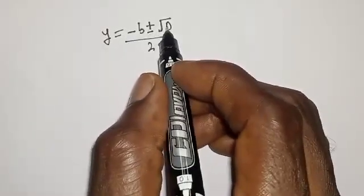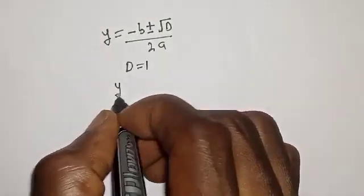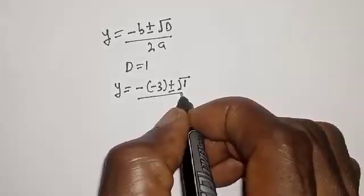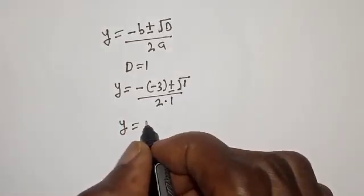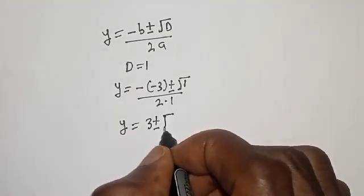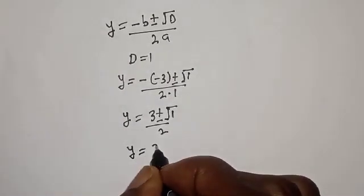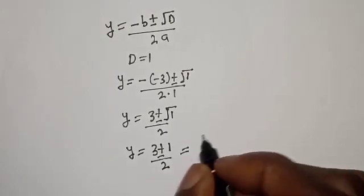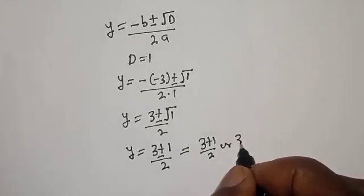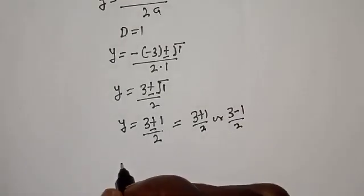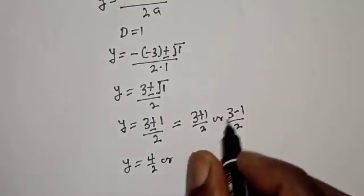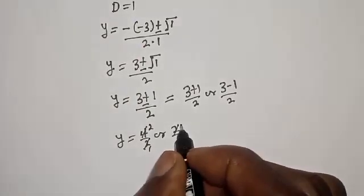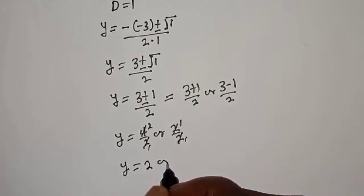Then y equals negative b plus or minus square root of d over 2a. With d equal to 1, y equals negative of negative 3, plus or minus square root of 1, over 2. This gives y equals 3 plus 1 over 2 or 3 minus 1 over 2, which simplifies to y equals 4 over 2 or 2 over 2. Therefore y equals 2 or y equals 1.